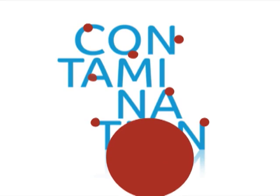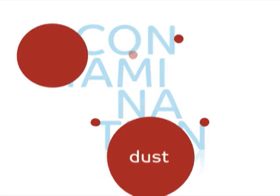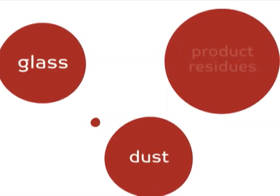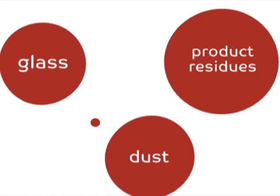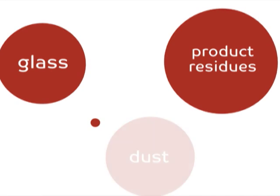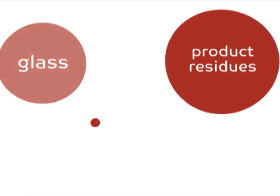Impurities can be of the most different types, for example dust particles, tiny splinters of glass or product residues. However, the most cunning troublemakers are microorganisms such as fungi, viruses or bacteria.